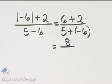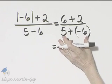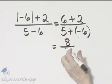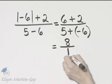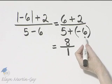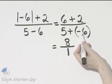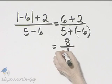In the denominator, I'm adding two numbers with unlike or different signs. We subtract absolute values. 6 minus 5 is 1, and we keep the sign of the number with the larger absolute value. This number has the larger absolute value, and it is negative.